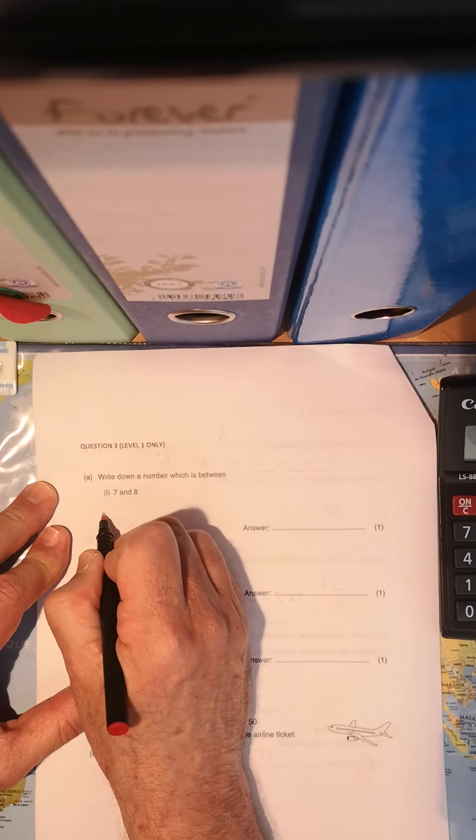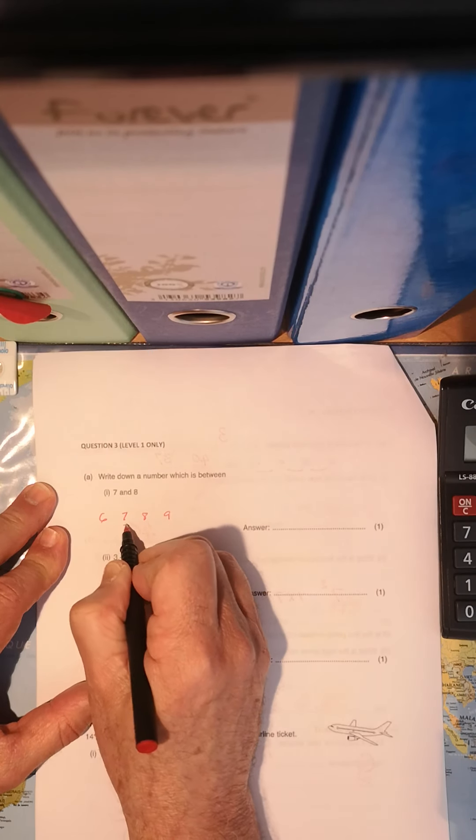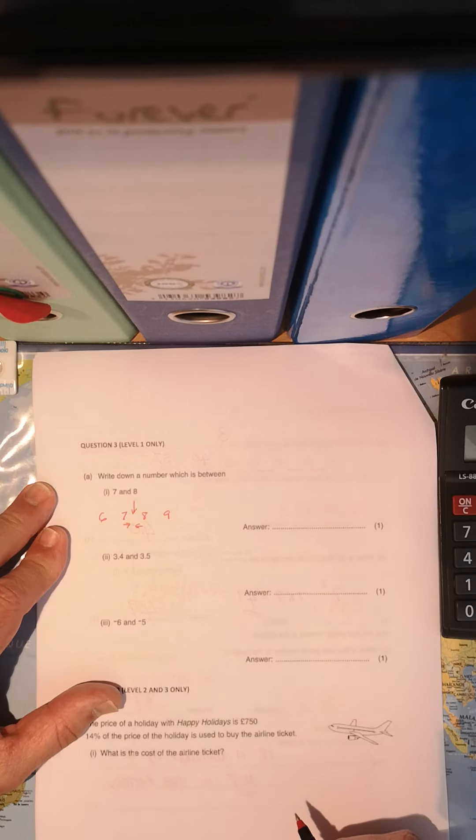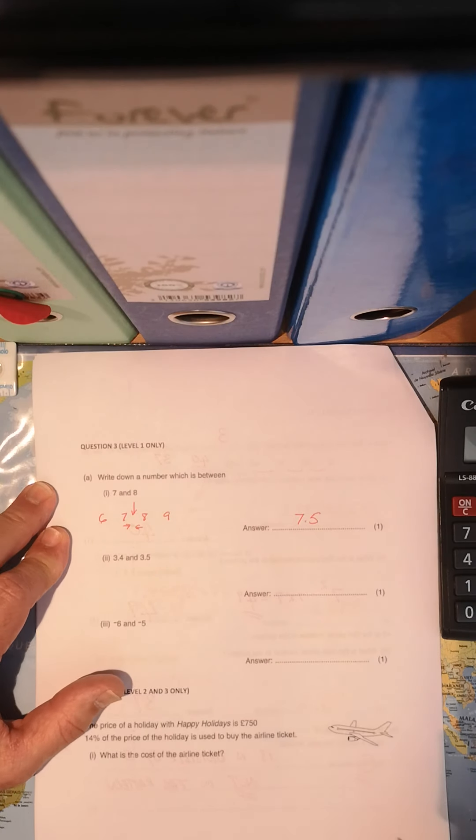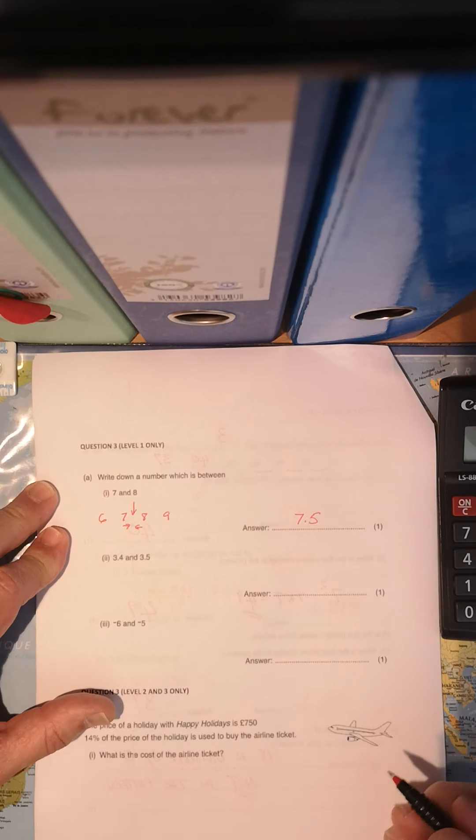So if we look at a number line and we've got 6, 7, 8, 9, they want any number that lies between 7 and 8. I think let's just take the obvious 7.5. Could have been 7.1, could have been 7.01, but let's just take it halfway. 7.5.